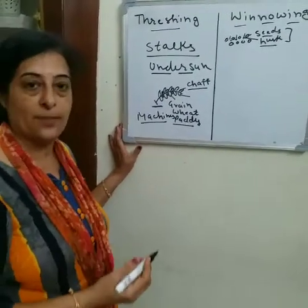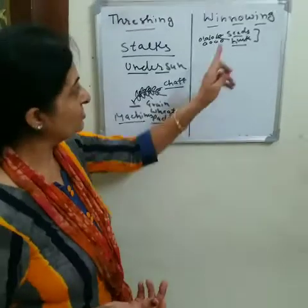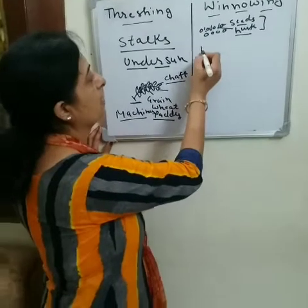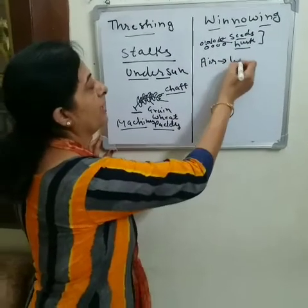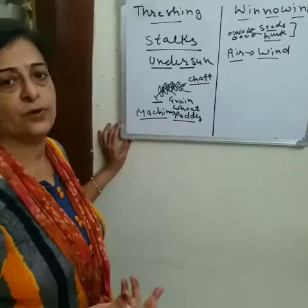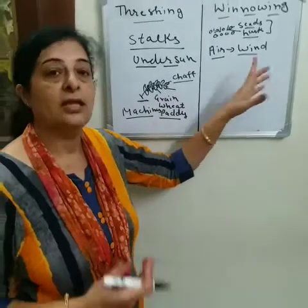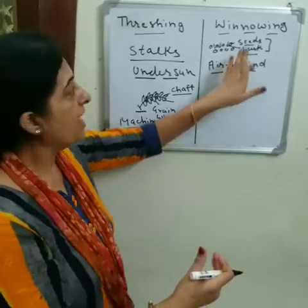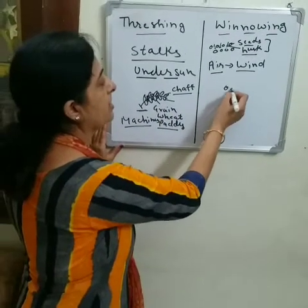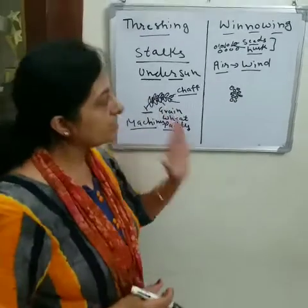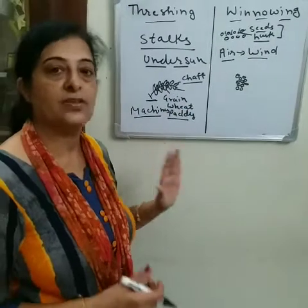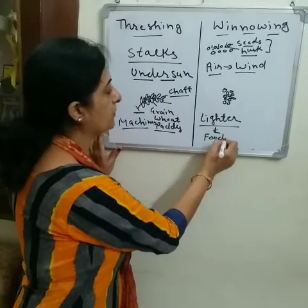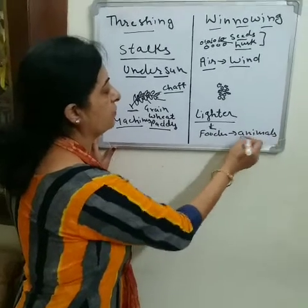Winnowing is a process to separate heavier particles from lighter ones. The seeds are the heavier particles and the husk is the lighter one. Winnowing is mainly done with the help of wind or blowing air. When the wind blows, the lighter husk particles move away and form a heap away from the platform, while the heavier seed particles collect near the platform. These lighter husk particles can be used as fodder for animals.